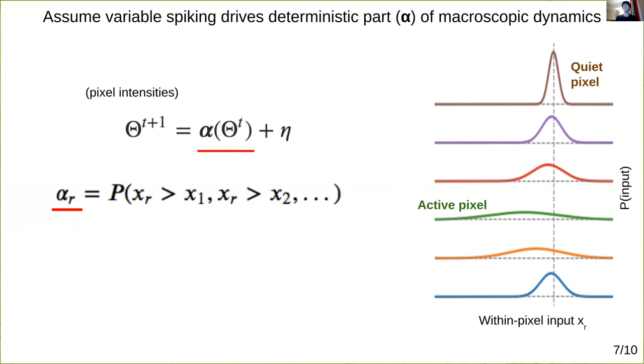Alpha r is thus the probability that a sample from the rth one of these Gaussians is bigger than samples from all the others. This drives the dynamics, which once again emerge from assuming irregular variable spiking, since this lack of knowledge of exactly which neurons will spike when couples the overall pixel activity to the mean and variance of its input distribution.